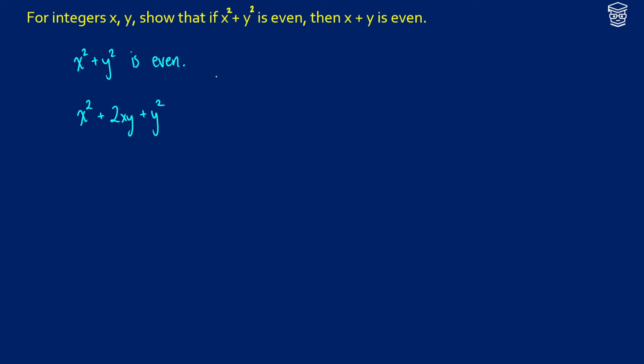But this isn't the original function we started with. So we're going to have to end up subtracting 2xy at the same time to just maintain x squared plus y squared. So we know that this is going to be even, because it's just x squared plus y squared, and we know that's even.